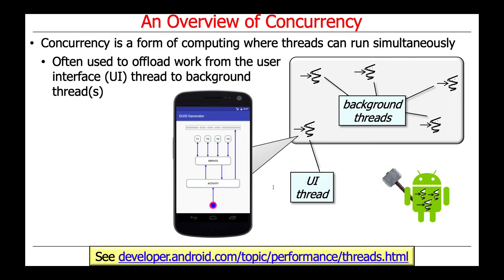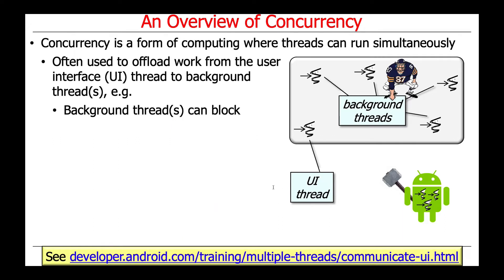In Android and iOS, there's a user interface thread doing the GUI work, and background threads for longer-running operations. On Android by default, if you try to do blocking operations — like opening a network connection — from the UI thread, the system throws an exception. If you block the UI thread, you get the application-not-responding error. Background threads can block; the user interface thread cannot.